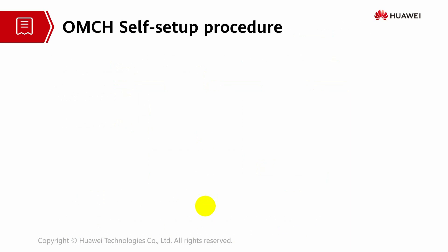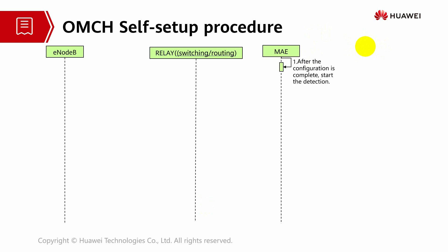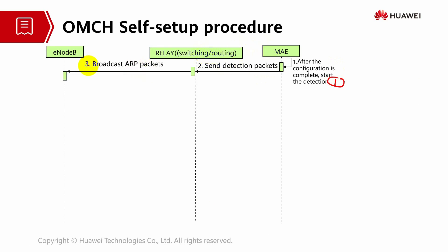The OM channel also has a self-setup procedure between the eNodeB, relay switching or routing, and MAE. After configuration is complete and detection starts, the MAE sends packets to the relay, and the relay broadcasts ARP packets which contain the MAC address. This happens during the commissioning process. When the MAE creates the commissioning process it sends an establishment request to the base station, requiring a source IP and destination IP, and will obtain the MAC address.